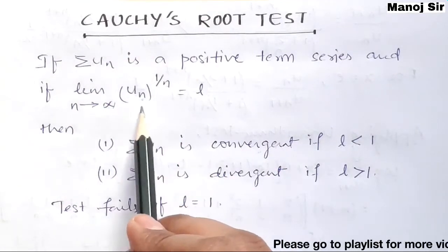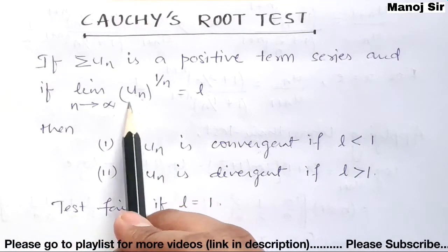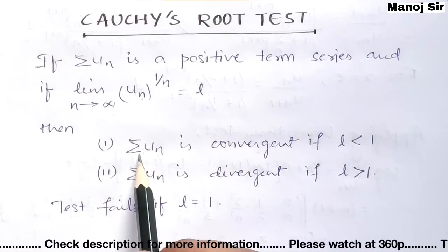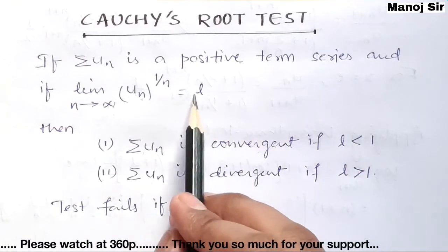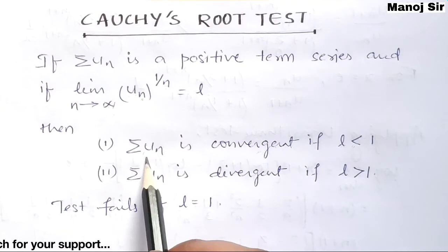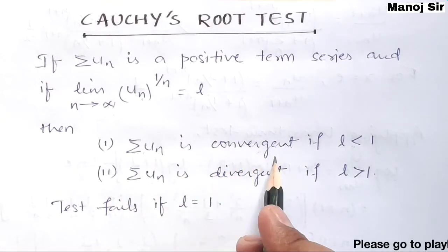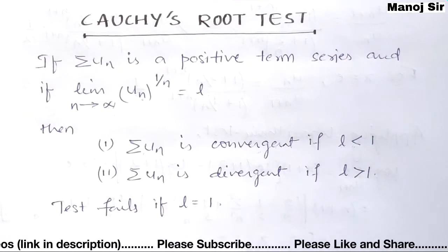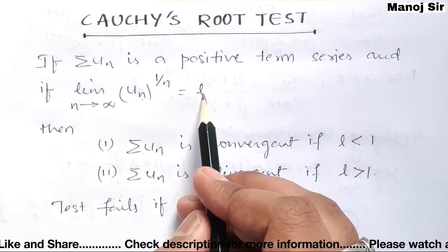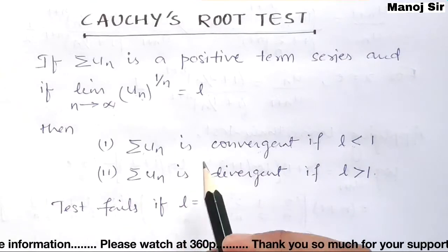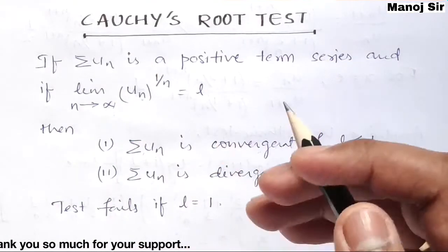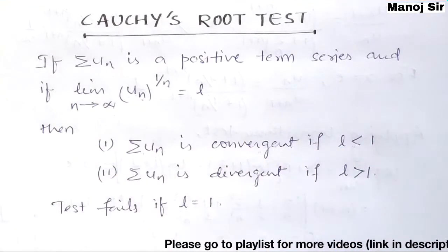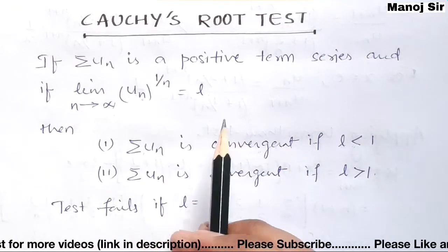In Cauchy's Root test we need to find the limit: limit n tends to infinity of u_n^(1/n). The value of this limit L decides whether the series is convergent or divergent. If L is less than one, the series is convergent. If L is more than one, the series is divergent. If L equals one, the test fails, and in that case we take the help of the comparison test.